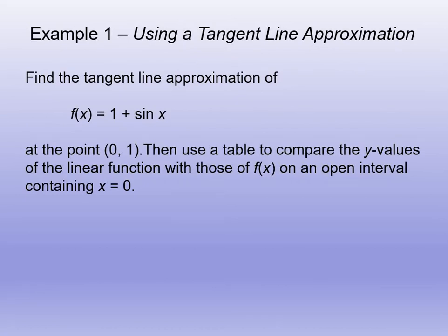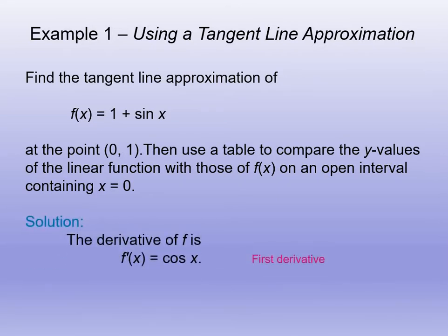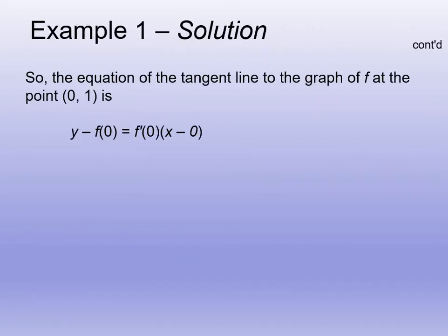Let's do an example: find the tangent line approximation of f(x) = 1 + sin(x) at the point (0, 1), then use a table to compare values. Our point is (0, 1), so c = 0 and f(c) = 1. First, take the derivative: f'(x) = cos(x). Then substitute in x = 0: cos(0) = 1, which is our slope.